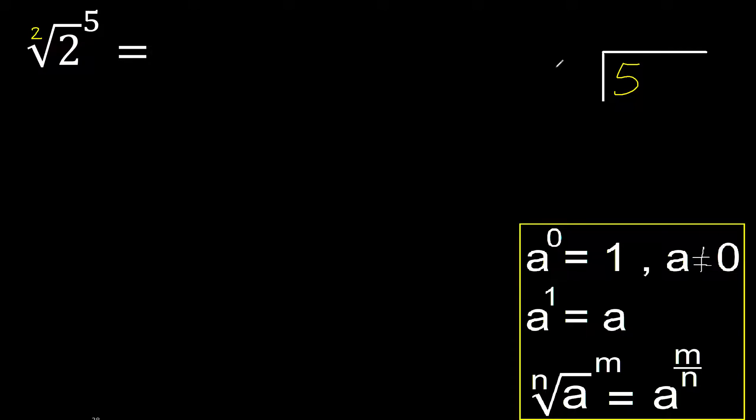5 divided by 2. 2 multiply by which number is nearest to 5 but not greater? 2 multiplied by 3 is 6, is greater. 2 multiplied by 2 is 4, subtract is 1.